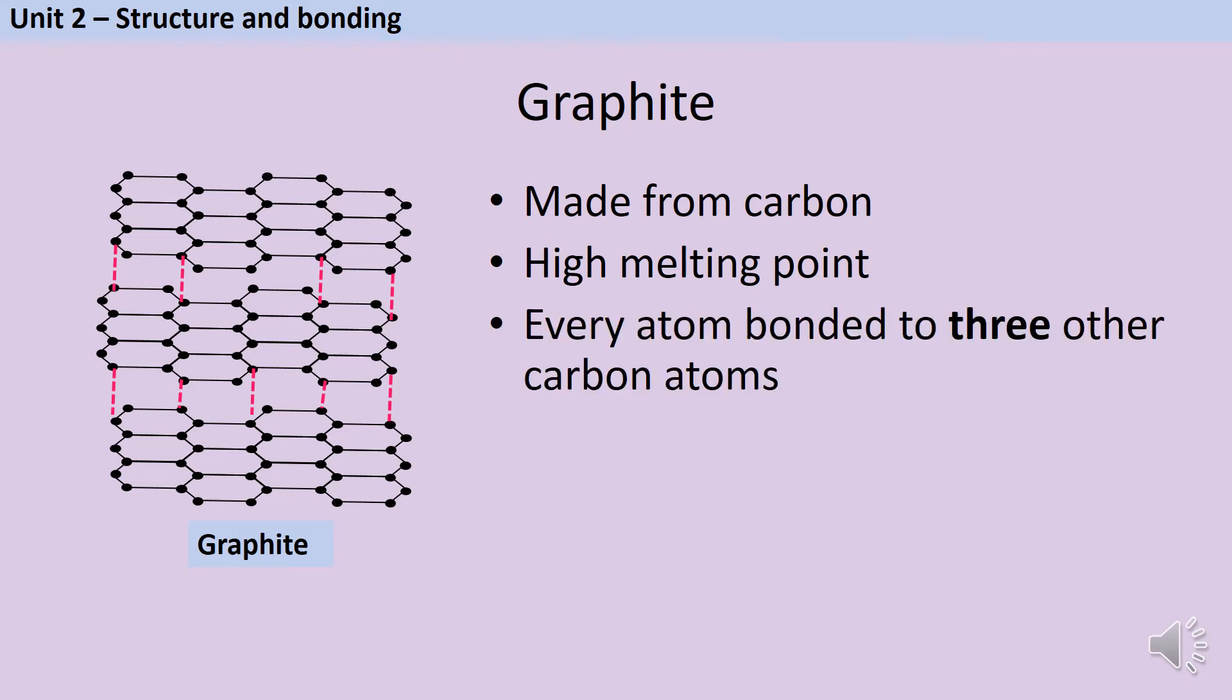In graphite, each atom is bonded to three other carbon atoms rather than four. As you can see in this diagram, they form hexagonal sheets. One sheet is separate from the sheet underneath it, there isn't a covalent bond between the sheets, and so they're able to move over each other.